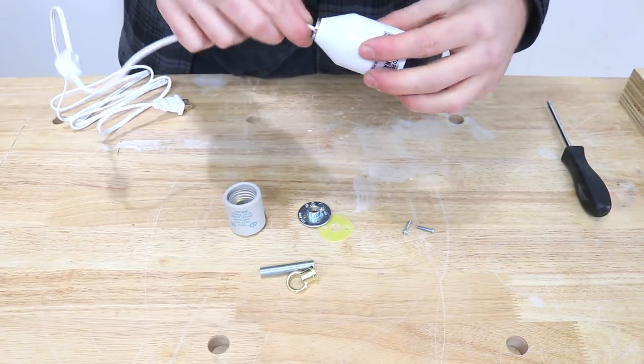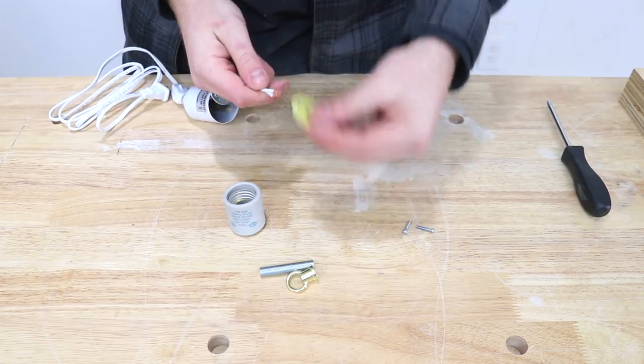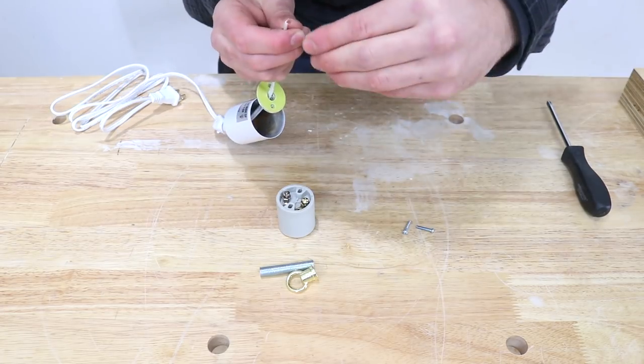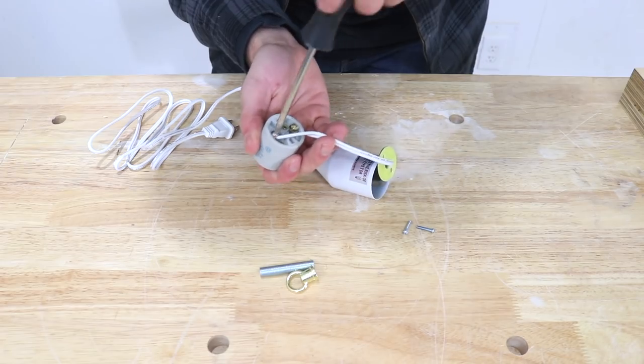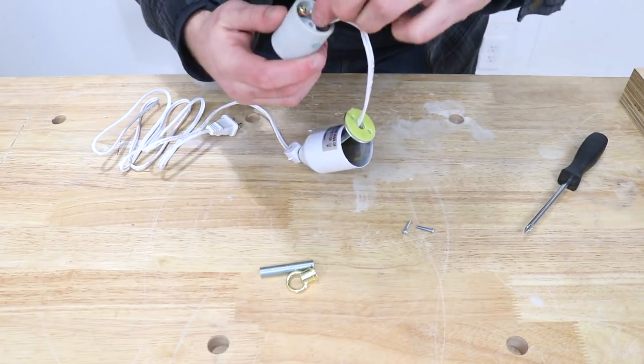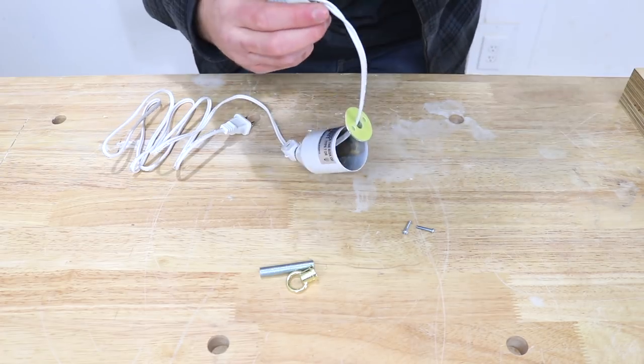Wiring a lamp socket is really simple. You just want to make sure you put your pieces on in the right order that way everything assembles correctly. On the ends of your wires you'll want to put a hook that wraps around each of the terminals clockwise. This way everything holds on really tight and you have a good connection.